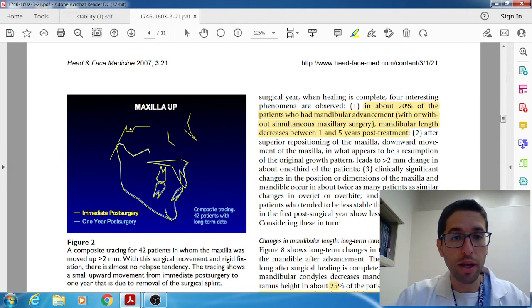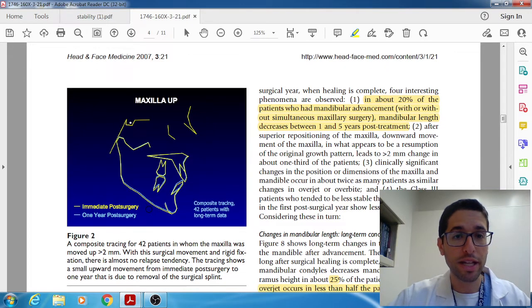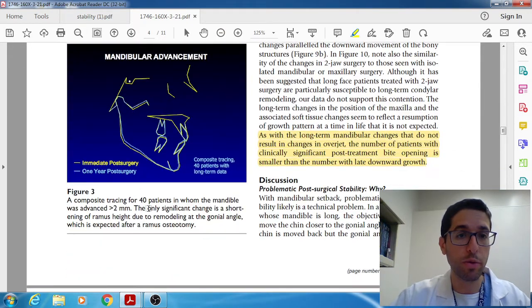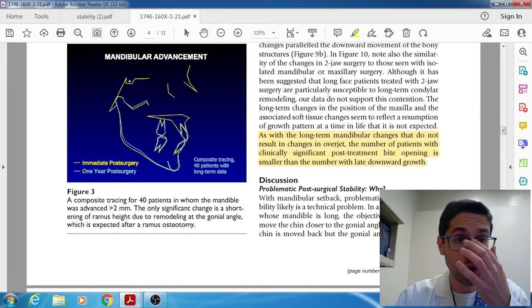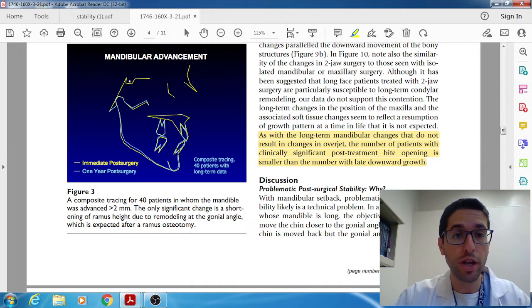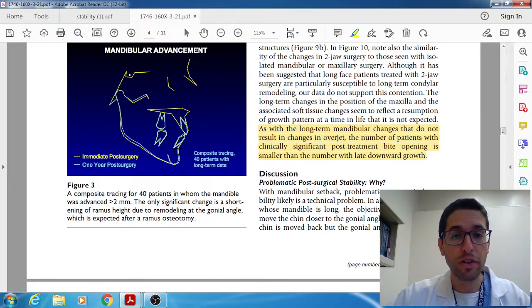Let's look at some of the pictures and then we'll get into this last part so maxilla up like we said that was highly stable and if you look at this composite tracing 40 patients so the yellow and the blue they're nearly overlapped which means there was almost no relapse. So that's maxilla up we knew that was a very stable one. The other one that was very stable was mandible forward and same picture this composite tracing shows almost no change from the surgery and one year later basically perfectly overlaying on top of each other.